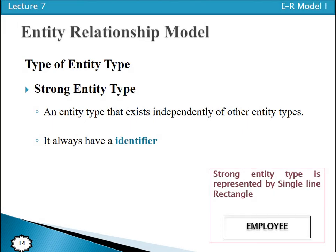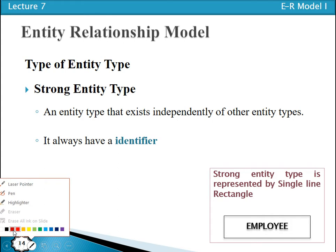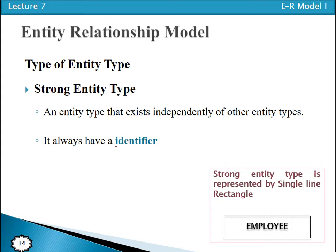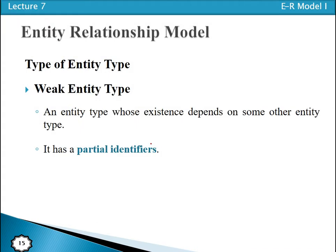When we have a strong entity type, it has its own identifier that can uniquely identify it. But when we have a weak entity type, we have only a partial identifier. We can identify a weak entity using the partial identifier combined with the identifier of the strong entity type on which the weak entity depends.